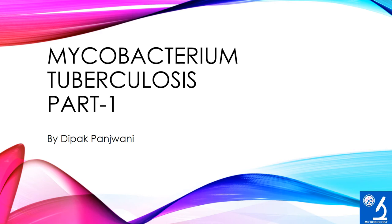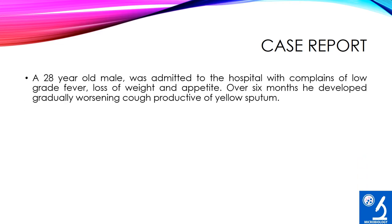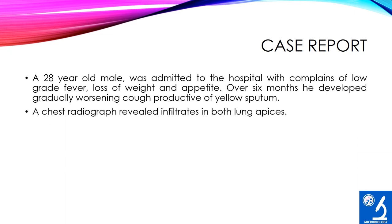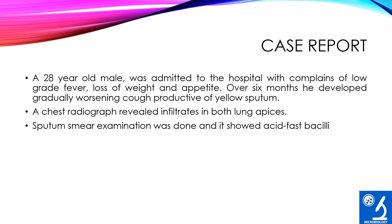Hello friends, welcome to the e-learning session on the very crucial topic of Tuberculosis Part 1. First, we will see the case scenario. A 28-year-old male was admitted to the hospital with complaints of low-grade fever, loss of weight, and loss of appetite. Over 6 months, he developed a gradually worsening cough productive of yellow sputum. A chest X-ray shows infiltrates in both lungs, while the sputum smear examination shows acid-fast bacilli. So what would be the most probable diagnosis and causative agent responsible for this situation?